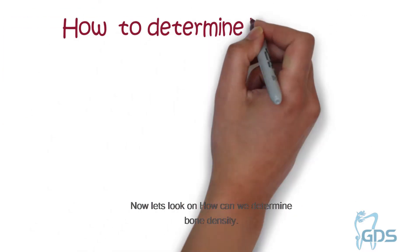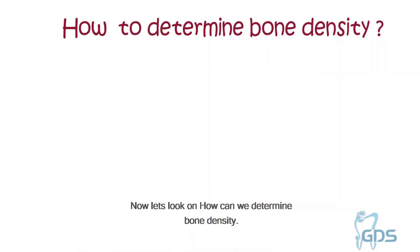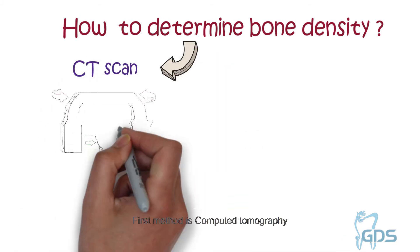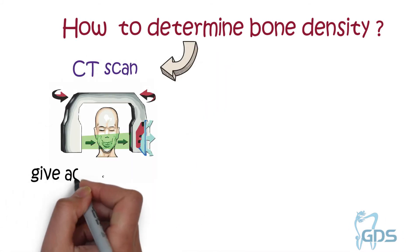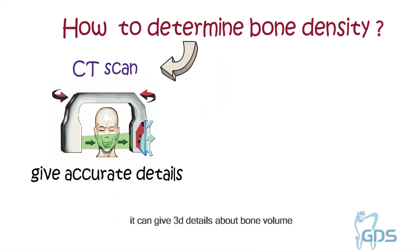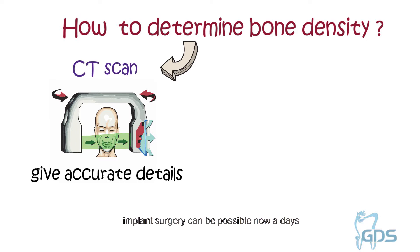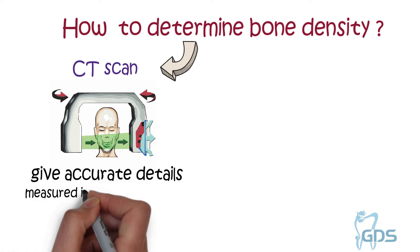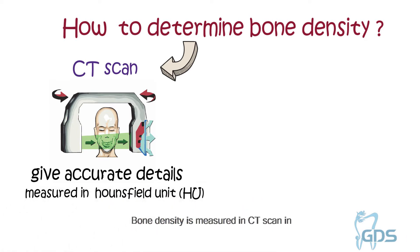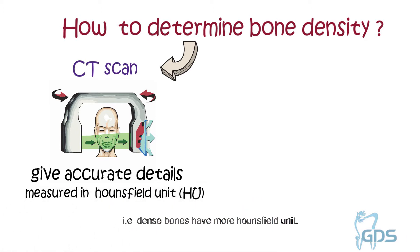Now let's look at how we can determine bone density. The first method is computed tomography. It can give 3D details about bone volume, bone density, and any defect at the site. Accurate implant simulation well before implant surgery is possible nowadays. Bone density is measured in CT scan in Hounsfield units, where dense bones have more Hounsfield units.